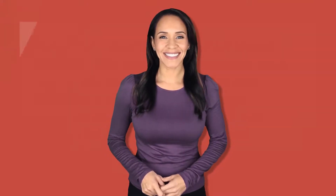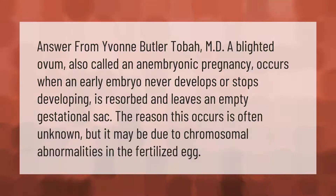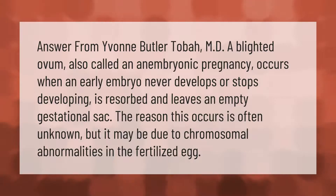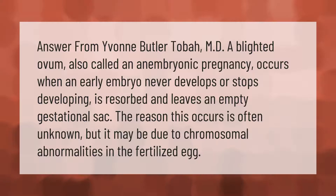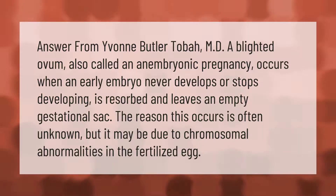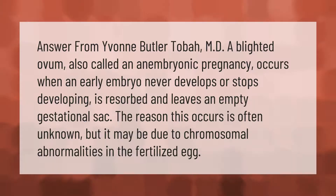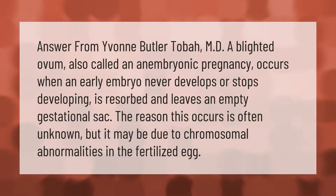Answer from Yvonne Butler Tobah, MD: A blighted ovum, also called an anembryonic pregnancy, occurs when an early embryo never develops or stops developing, is resorbed, and leaves an empty gestational sac. The reason this occurs is often unknown, but it may be due to chromosomal abnormalities in the fertilized egg.